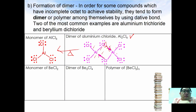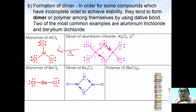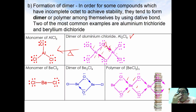Beryllium chloride can do the same thing. In BeCl2, the lone pair electrons from chlorine donate to beryllium to form the dimer via dative bonds between Cl and beryllium on both sides. Beryllium chloride can also exist as a polymer, where both chlorine atoms donate their electron pairs to beryllium, allowing beryllium to achieve octet with eight electrons, stabilizing the polymer form.